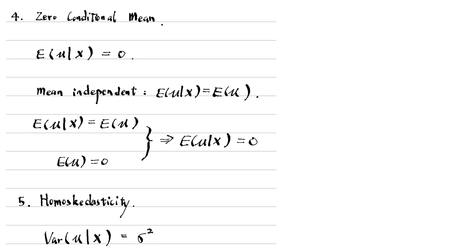For example, when the variance of the error term mu is a function of the explanatory variable X, the variance is no longer a constant, so the homoscedasticity assumption does not hold. In this case, the weighted least squares estimators have a smaller variance than the ordinary least squares estimators. The best linear estimator becomes the weighted least squares estimator instead of the ordinary least squares estimator.